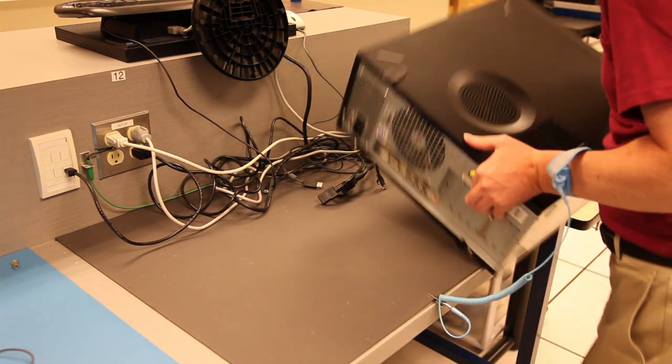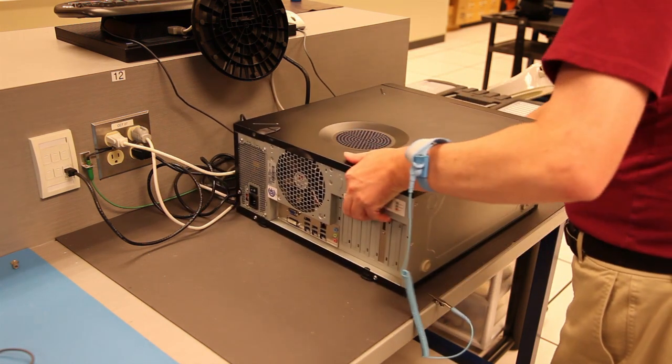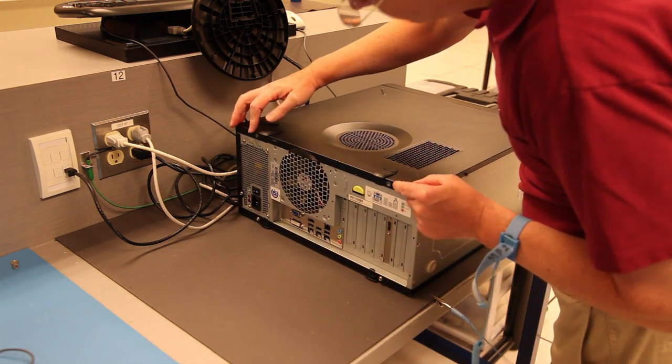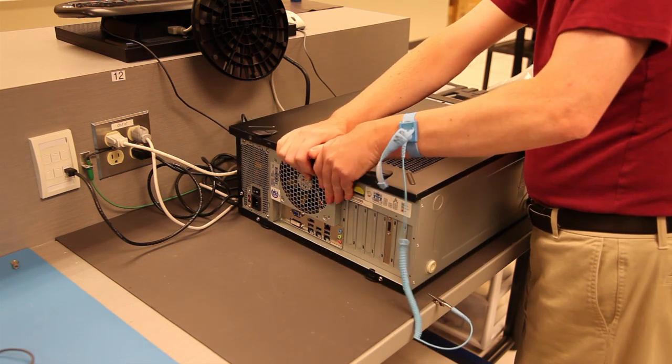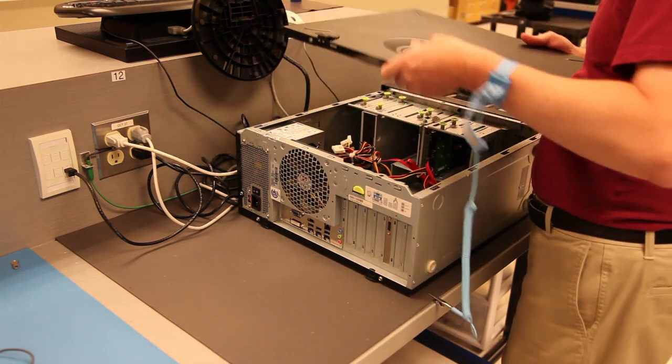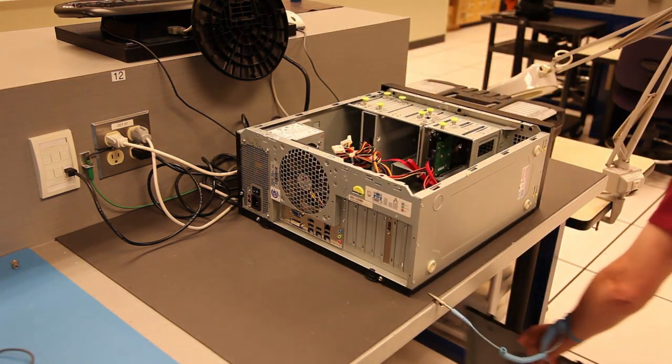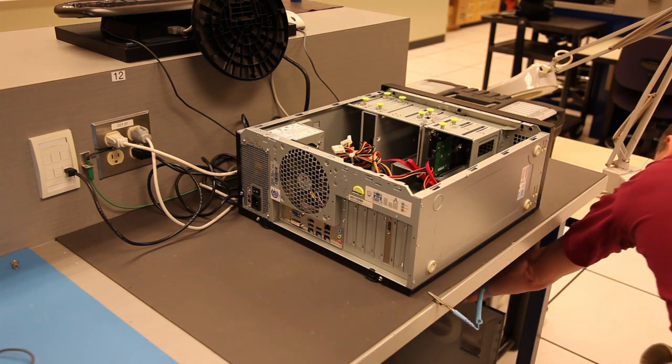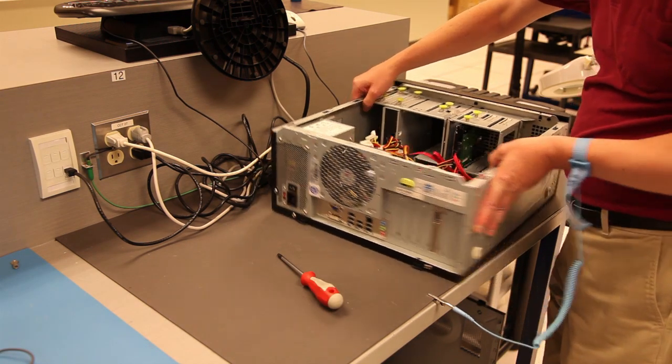Lay the case on its side and remove the two screws that secure the side cover to the case, if there are any. Lift up the two locking mechanisms and slide the side cover back until you can lift it off the case. Set the side cover underneath your bench so that it's not a tripping hazard.